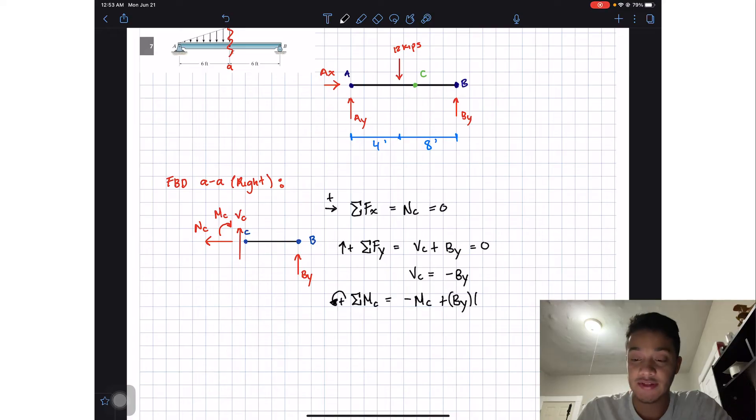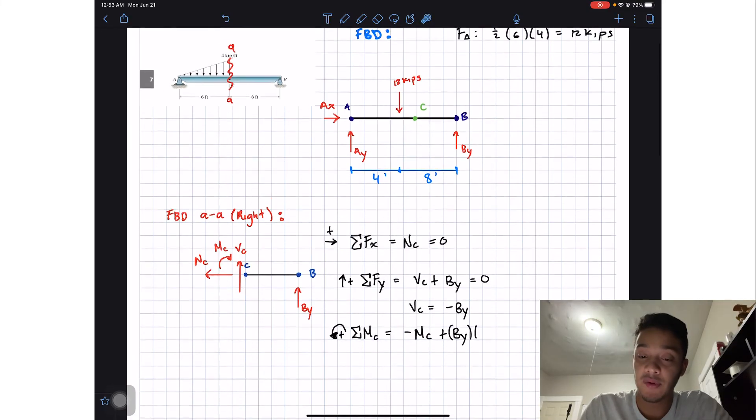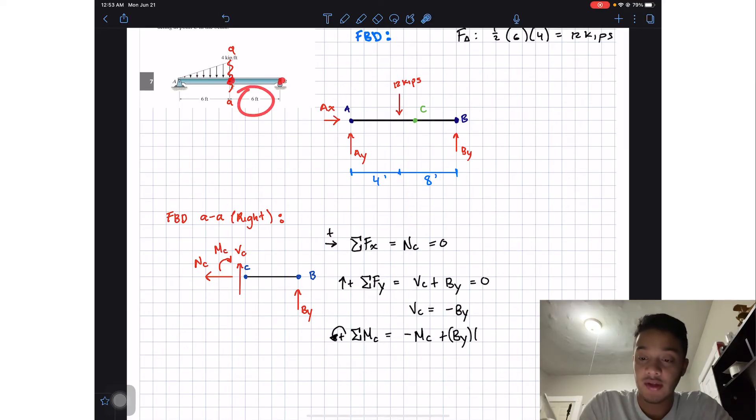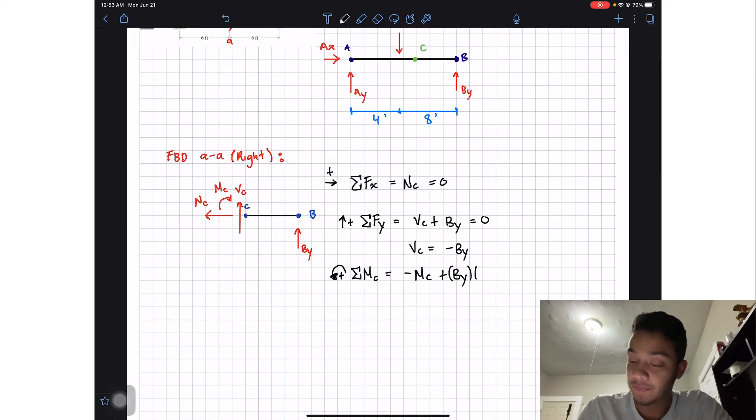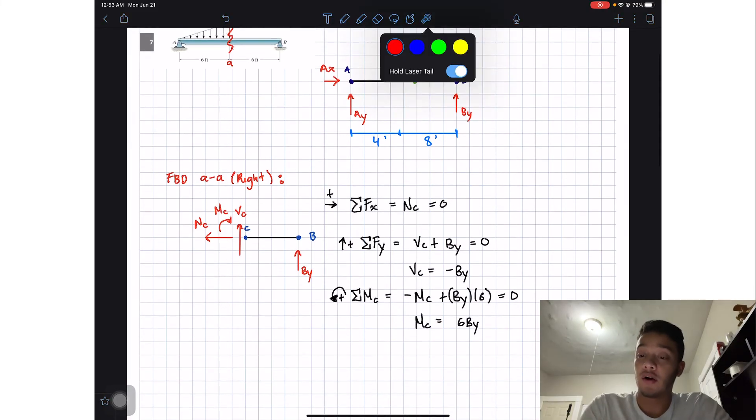Multiplied by the distance, so what is the distance between point C and point B? From here to here is given in our main drawing, we have 6 feet, and all this should be equal to zero. Solving for Mc we get that this is equal to 6 times By.